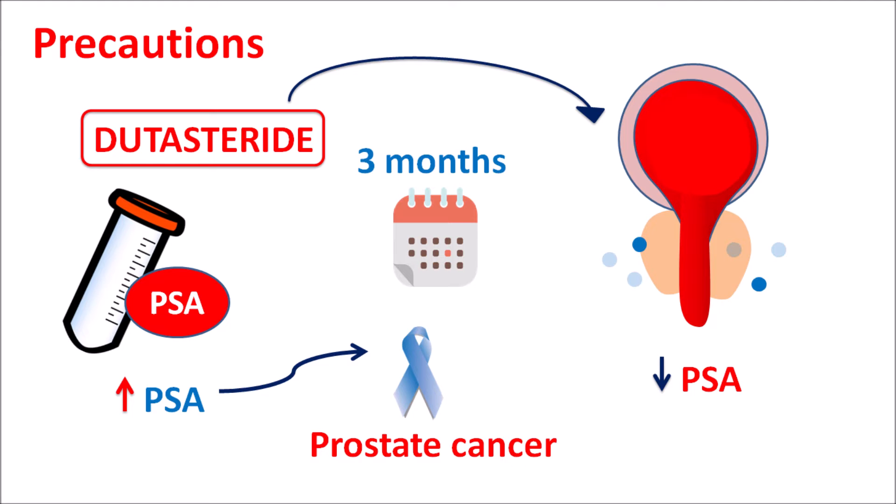During treatment with dutasteride, PSA levels are generally reduced, but in patients with prostate cancer, PSA levels may be slightly increased, indicating the development of prostate cancer. Furthermore, dutasteride can increase the risk of development of prostate cancer, so all these factors should be carefully monitored when this drug is prescribed for long-term treatment of BPH.